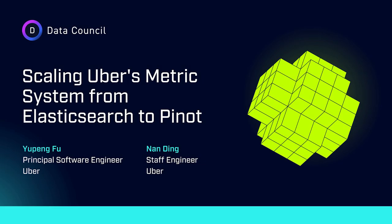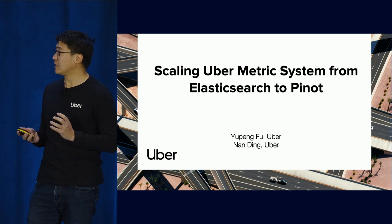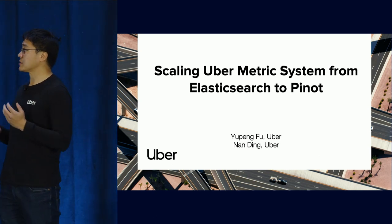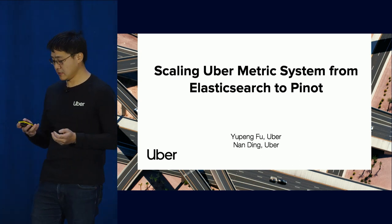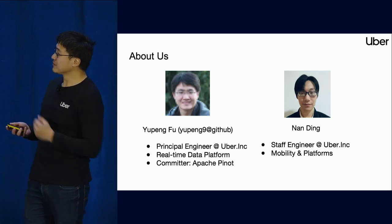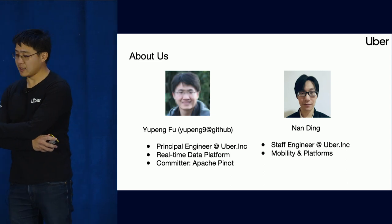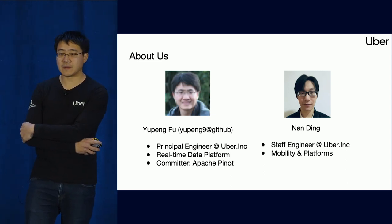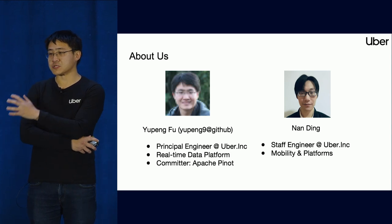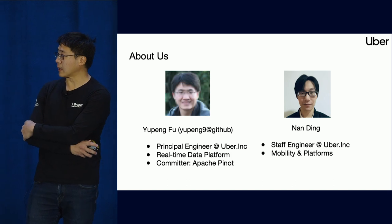Hi everyone. I'm Yu Peng, and this is Nan, my colleague here. We're happy to be here today to talk about Uber's metric system and share our journey about how we scaled it up from Elasticsearch to Pinot. My platform is built on top of open source software like Apache Kafka, Flink, and Pinot, and this talk is mainly about Pinot.